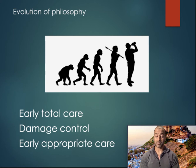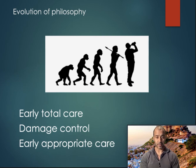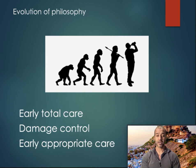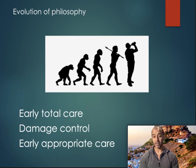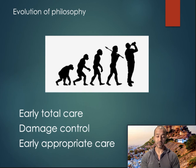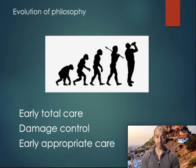Hence, the pendulum swung the other way and you had damage control orthopaedics, in terms of traction pins and external fixators being applied. Now we've come to a position somewhere in the middle, where we're evaluating and assessing the patient based on parameters of resuscitation and thereby judging how we should proceed. There's still the Holy Grail being sought after: the measurement of inflammatory response and significance of the injury, such as IL-6, IL-8 and other cytokine measures.